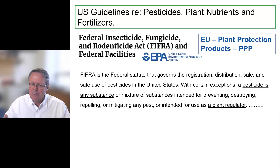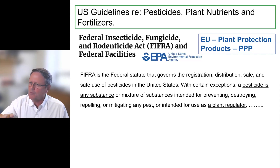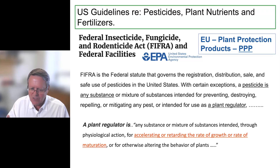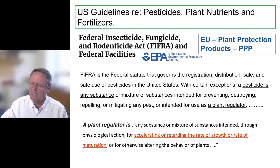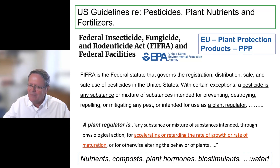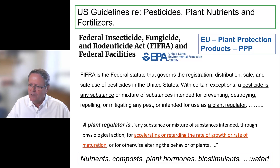FIFRA defines what is a pesticide. With certain exceptions, a pesticide is defined as any substance or mixture of substances used for preventing, destroying, repelling, or mitigating pests. But also anything used for a plant regulatory effect — which requires us to look at the definition of a plant regulator. A plant regulator is any substance which acts through physiology to accelerate or retard the rate of growth or maturation of a plant. When you think about that, it's easy to see how pesticides and herbicides would be classified this way. But in reality, anything that influences the rate of growth of a plant would obviously include nutrients, compost, plant hormones, biostimulants, water — so everything is captured under that definition of plant regulator. This is one of the great errors in regulatory framework over the last 50 years.